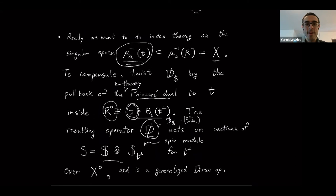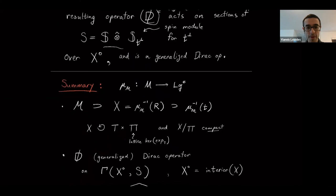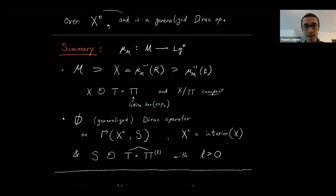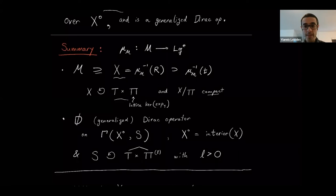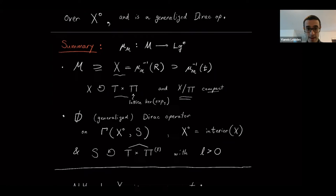So here is a summary of the index-theoretic setup. We're studying Hamiltonian loop group spaces with an action of the loop group and a moment map into LG-star — the space of connections on a circle. We're looking at this finite dimensional submanifold X inside this loop group space — that's where we'll be doing index theory. It has an action of this group of closed geodesics in the torus. The space X is non-compact, but the analysis is still under control because the quotient is compact. This X also has a canonical spin-C structure, so we can build this generalized Dirac-type operator acting on smooth sections over that space.